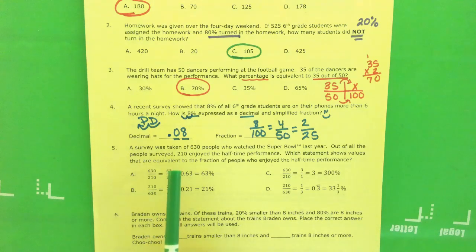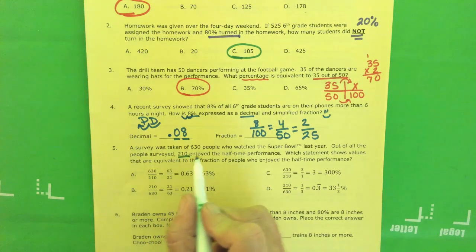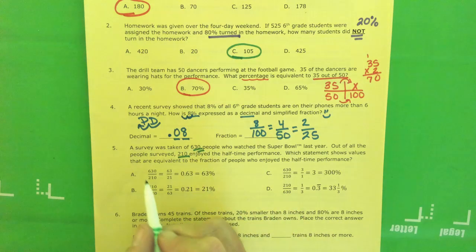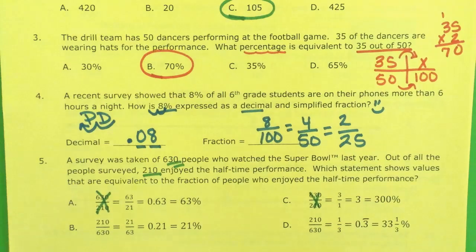A survey was taken of 630 people who watched the Super Bowl last year. Out of all those people surveyed, 210 enjoyed the halftime performance. Which statement shows values that are equivalent to the fraction of people that enjoyed the halftime performance? I know 210 is the part out of 630 the total. So 210 goes on top. A is out. C is out.